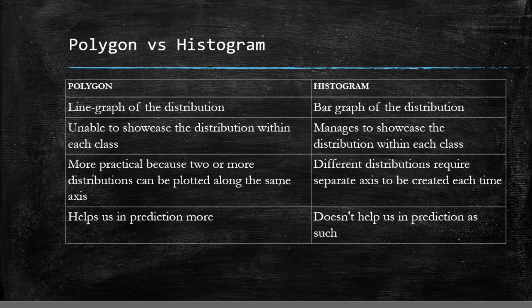The polygon does not show you the distribution of frequencies within each class as clearly as a histogram does. However, a polygon is more practical because polygons of two or more data sets can be plotted on the same axis to help in comparative analysis, while a histogram requires a separate axis for each data set.